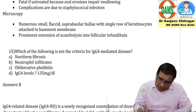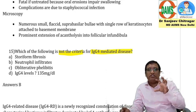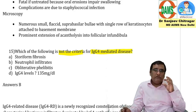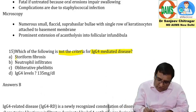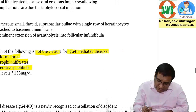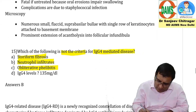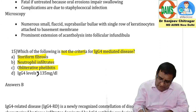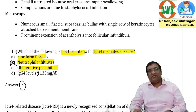Let us look: which of the following is NOT a criteria for IgG4 mediated disease? Remember, in IgG4 mediated disease there will be IgG4 producing plasma cells. Options: storiform fibrosis, neutrophilic infiltrate, obliterative phlebitis, IgG4 levels more than 135. The correct answer is B — neutrophilic infiltrate is not a criterion; it should be plasma cells.